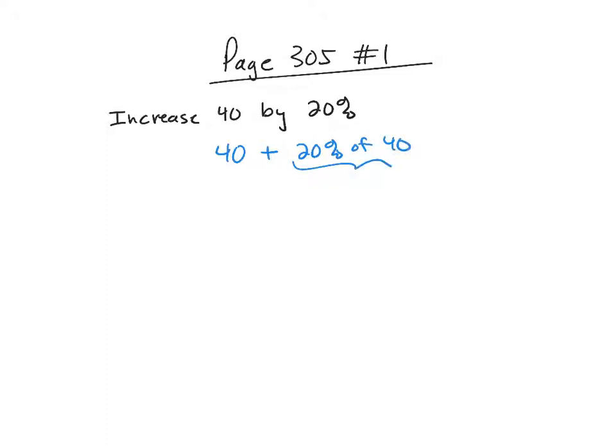So this part we know how to do. 20% is .20, of means times. So I'm going to take .20 times 40, and if I put that in my calculator, I'm going to get 8. So what I'm looking for is 40 plus 8, which is 48.